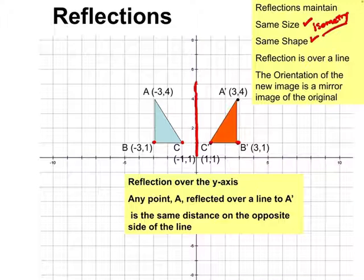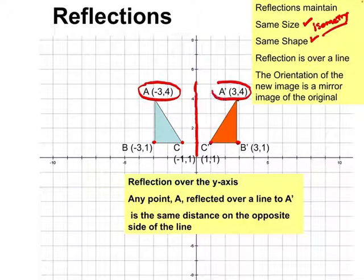Notice point A and A prime — look at the coordinates. You'll notice that something stays the same and something changes. Whenever we do a reflection, you're going to want to notice what stays the same and what changes.